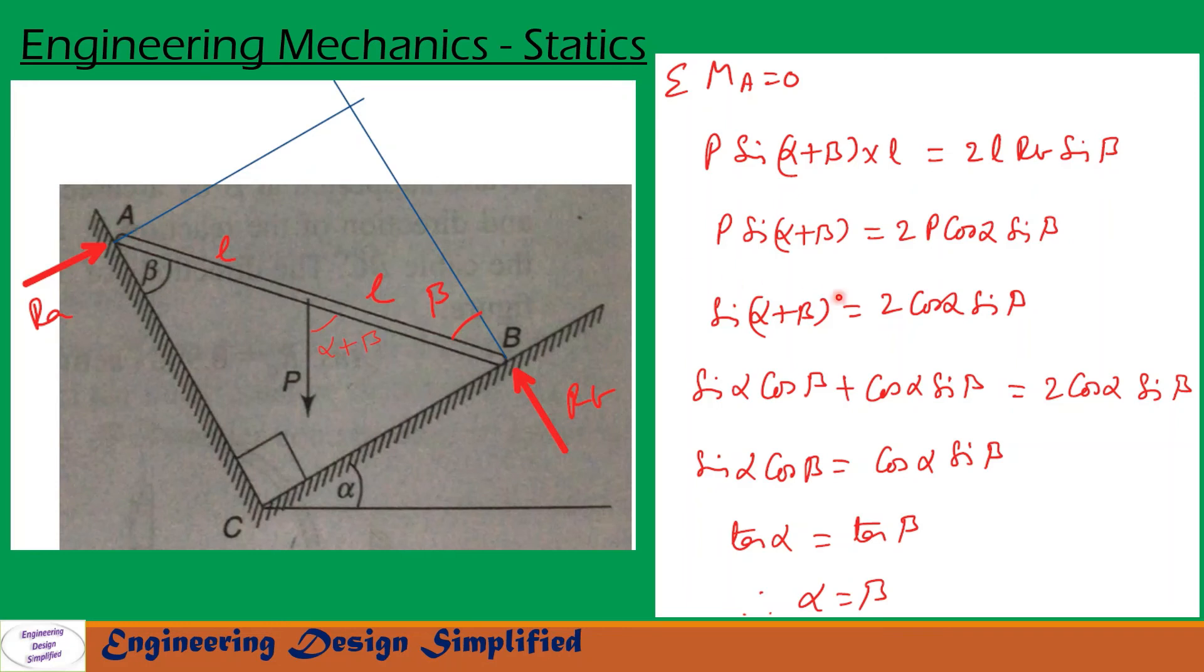That should be equal to moment due to RB about A. So moment due to RB about A can be written as the component of RB perpendicular to this bar AB, which is RB sin beta since this angle is beta and total length is 2L. So 2L into RB into sin beta.